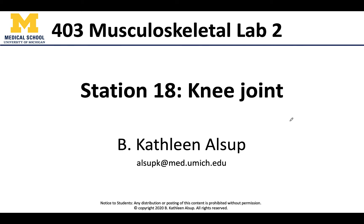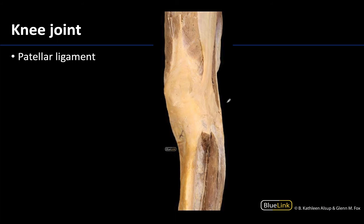Hello anatomy colleagues, this is Dr. Alsup and welcome to station 18. Let's get into the knee joint, which is a fun complex joint. Before we get into a really deep dissection, I want you to look at what the knee joint looks like from an anterolateral view, where you can see the patella projecting in this region. There is a lot of tendon, a lot of ligament, and just a lot of fascia in general in this region.